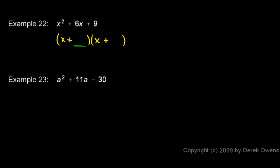We need to find the numbers to put in here. We need two numbers that add up to 6 and multiply to 9, and you can probably see that x plus 3 times x plus 3 will do it.